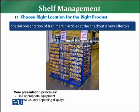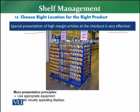The last principle of presentation is about choosing the right location for the right product. The special presentation of high-margin articles at the checkout is very attractive. Normally imported articles are high-margin articles, or there are some articles which bring more margins to the retailers. Because some articles in the store would be traffic generators, but some articles would be margin generators, so the objective of the retailer is to focus on both — you need traffic at one point and you also need the margin.